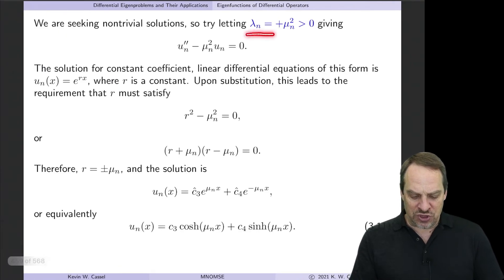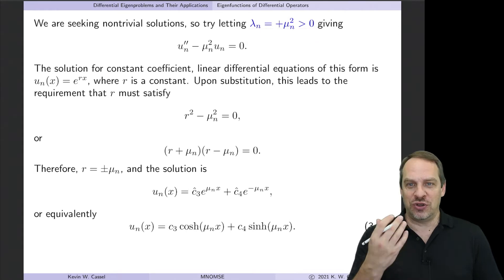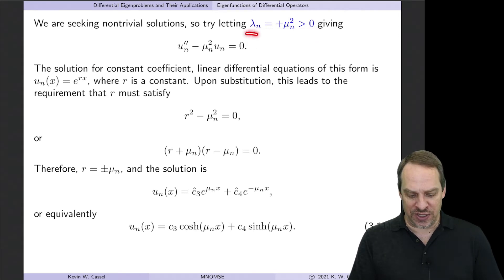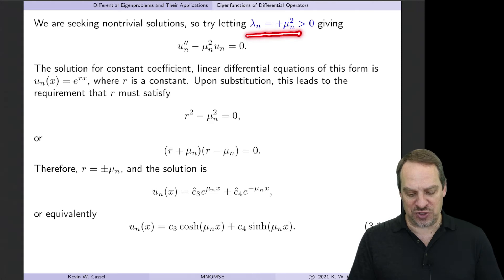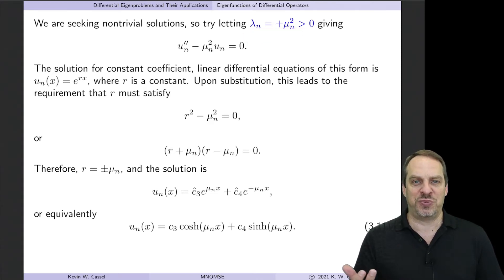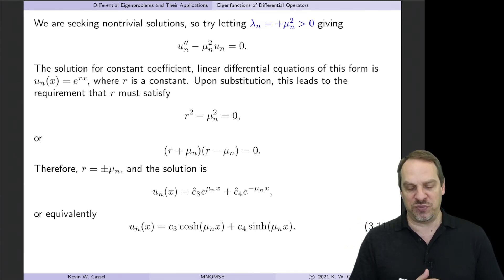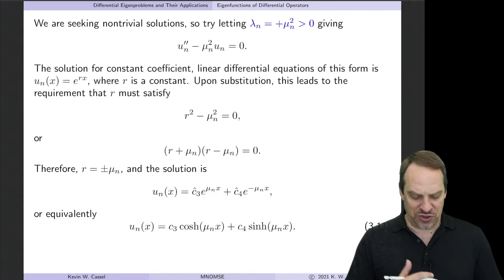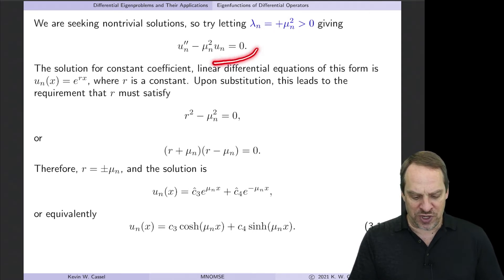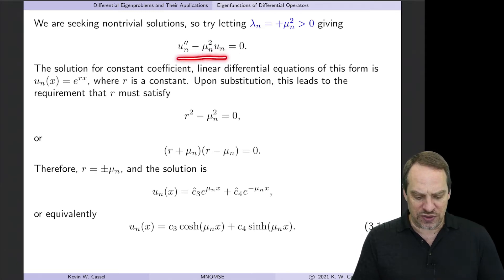Let's next try the case where lambda is positive — lambda greater than zero. What I prefer to do is set lambda equal to plus mu_n squared, which of course for any mu is always positive. That way I don't have to remember that lambda is positive, and besides, we're going to get square roots of lambda all over the place, so this way we'll just have mu_n's. So if lambda is plus mu_n squared, when we bring that over to the left-hand side, we'll have minus mu_n squared u_n. This is a second-order linear differential equation with constant coefficients.